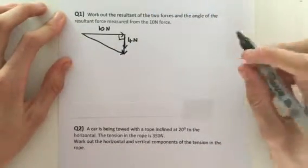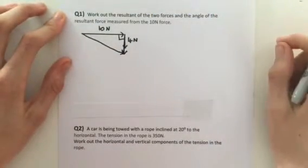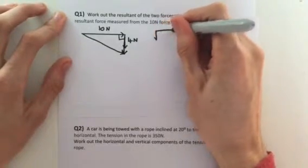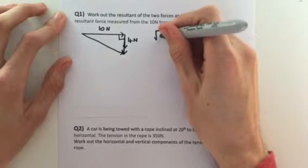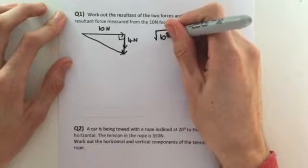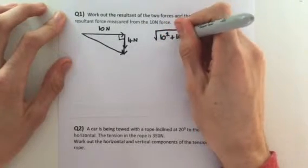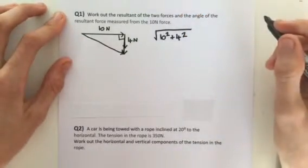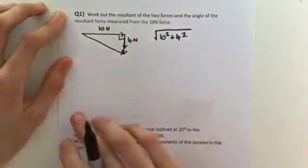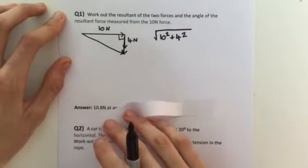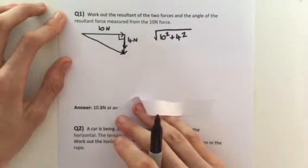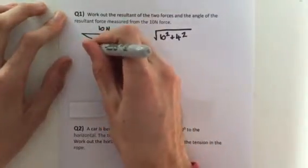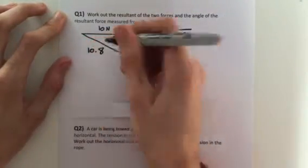So work out the resultant of the force. So all you do is you take the square root of 10 squared plus 4 squared. So the answer is 10.8 newtons. So we can write 10.8 newtons.